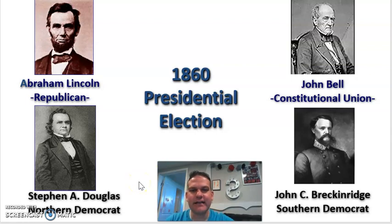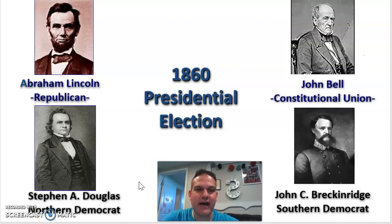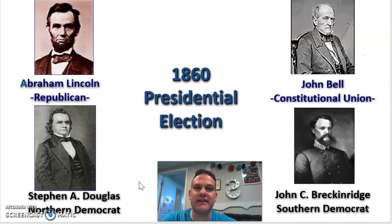Lincoln is going to be running against John Bell, who is the Constitutional Union Party. The whole idea of their party is to unite under the Constitution — no longer fighting the arguments between slavery and freedom, but just listening to the Constitution. It doesn't say anything about slavery, so let's just do that.